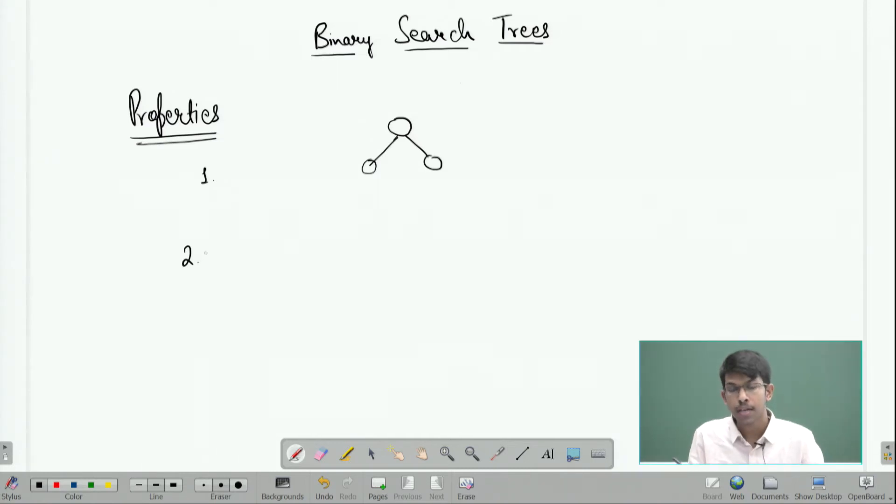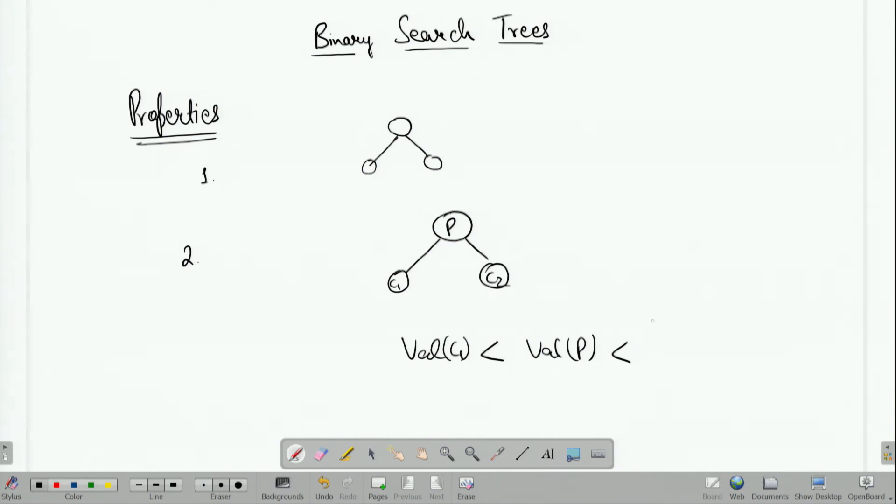property, which is the invariant property of binary search trees, is that for each parent P which has two children C1 and C2, the value of C1 must be less than the value of the parent, and the value of C2 must be greater than the parent. As a consequence of this, for any binary